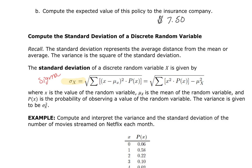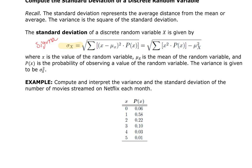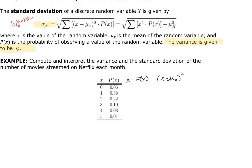Like in chapter 2 with grouped frequency tables, if we didn't take the square root of the summed last column, that was our variance. Now our variance is going to be sigma squared. To fill in this table, we're going to need a column for x times P(x), then our deviations which is (x minus mu sub x) squared, and then one additional column where we take those entries and multiply by the probability of that happening.